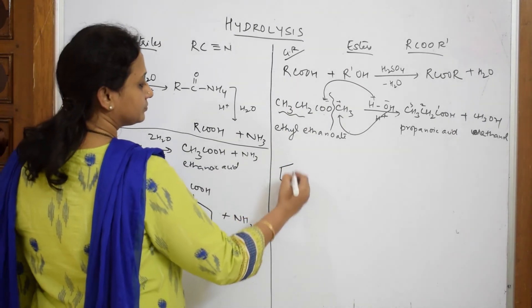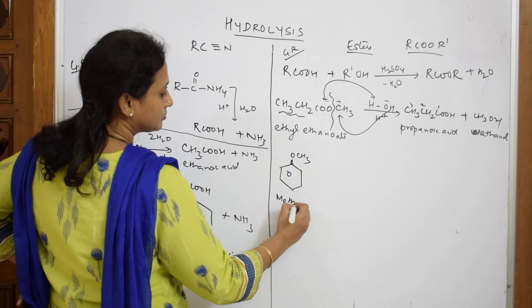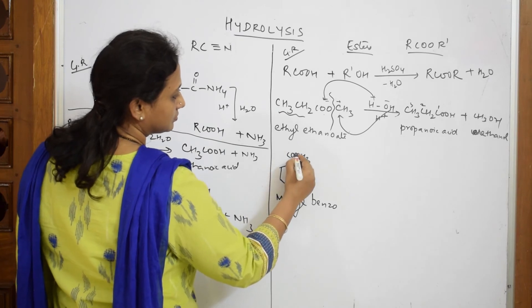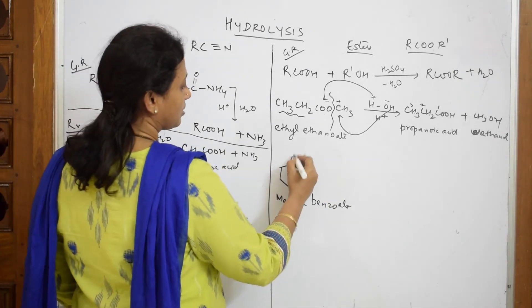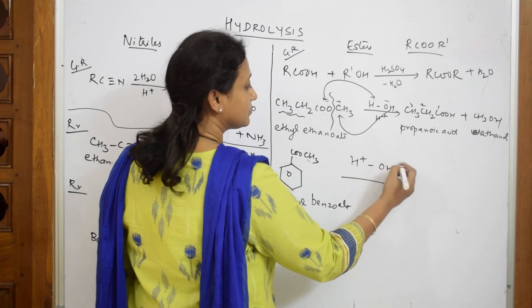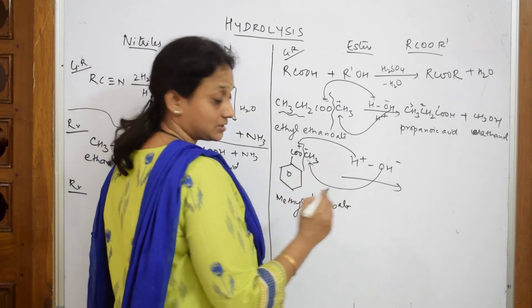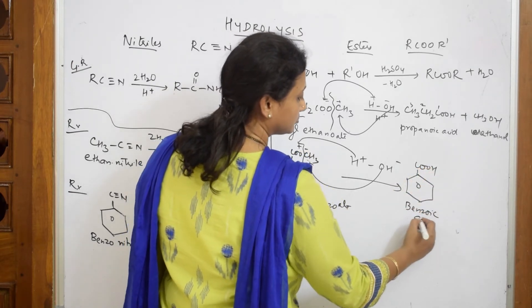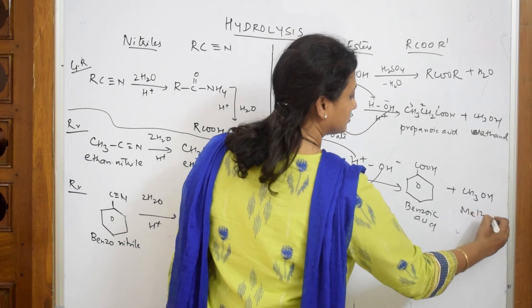Suppose if I have this compound, what is this compound? This is called methyl benzoate. When this undergoes hydrolysis, you will cleave the bond here, plus and minus. H comes here and OH goes and attacks here. What do I get? I get benzoic acid and the leftover comes out as methanol.